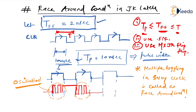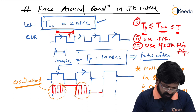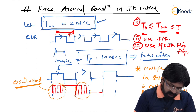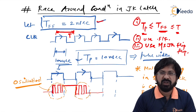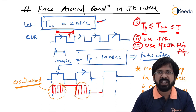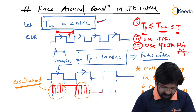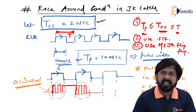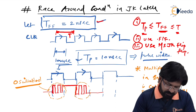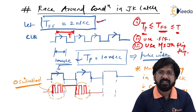I am sure you have understood what is meant by race around condition. Race around condition is when J=1 and K=1 — that is, when JK flip-flop is in toggle mode — and because of level triggering, it gets more time to toggle. With propagation delay of 2ns and pulse width of 10ns, the latch toggles 5 times per clock, behaving like an oscillator. This multiple toggling in every clock is what is called race around condition. In the next video, we will learn master-slave JK flip-flop.